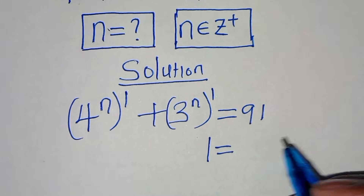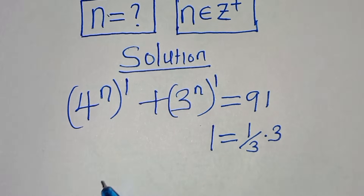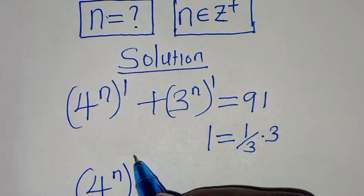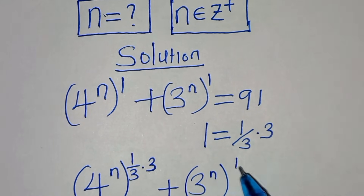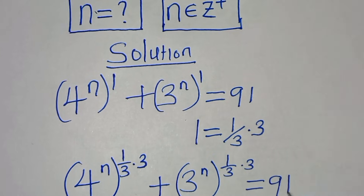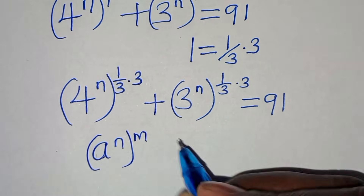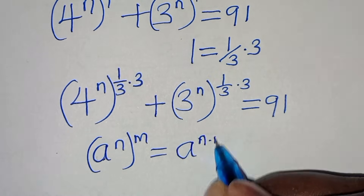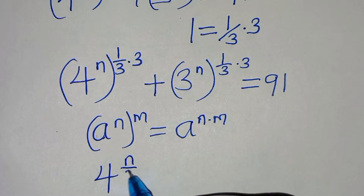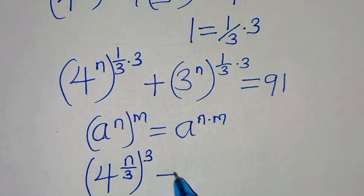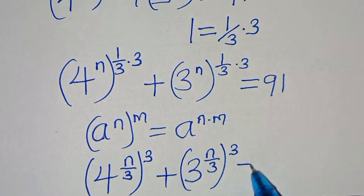We can express 1 as (1/3)×3. Substituting, we have 4 to the power of n raised to the power of (1/3)×3, plus 3 to the power of n raised to the power of (1/3)×3, equal to 91. This is in the form a^(n×m). Applying this identity, we get 4 to the power of (n/3), all cubed, plus 3 to the power of (n/3), all cubed, equal to 91.